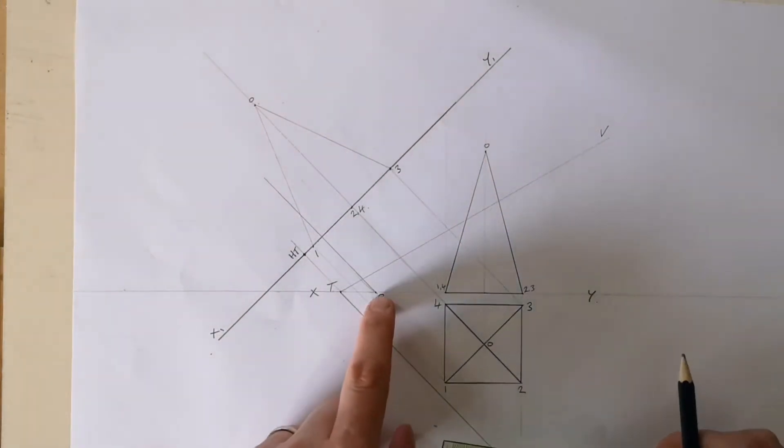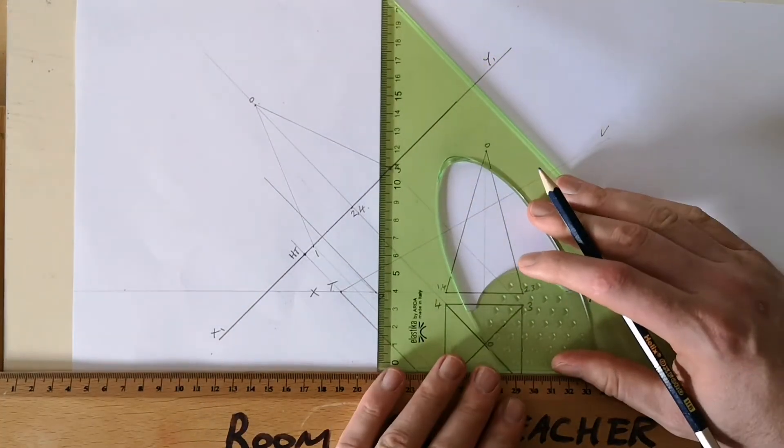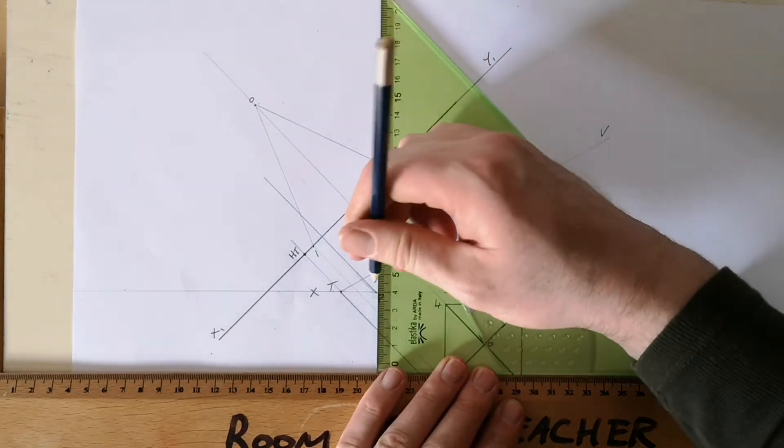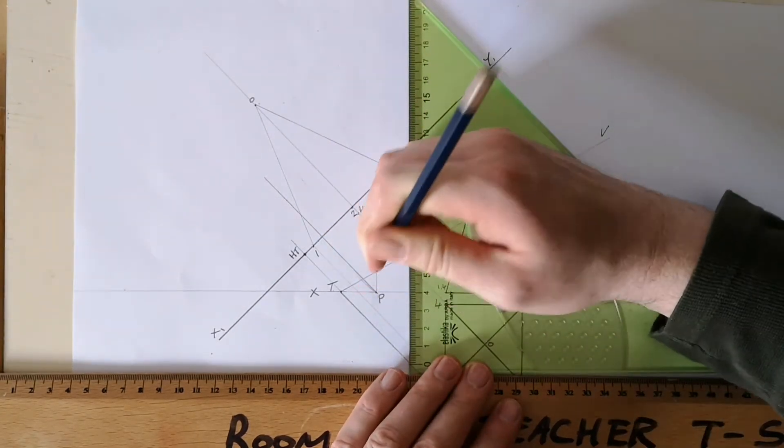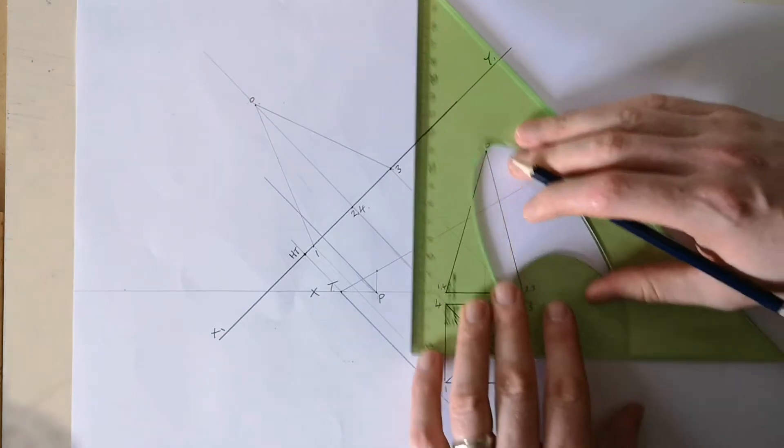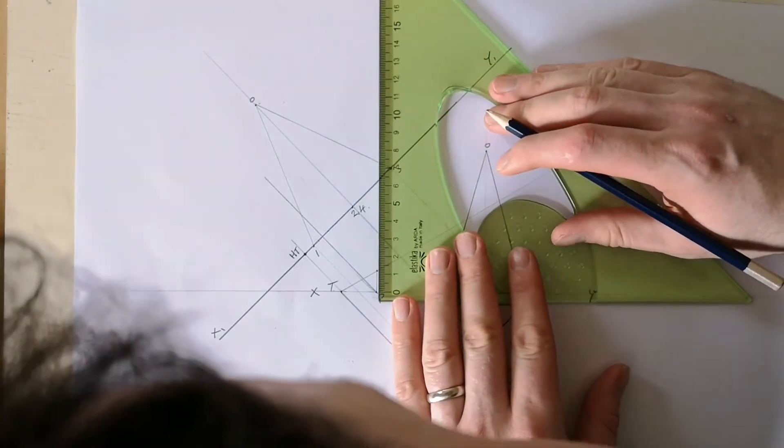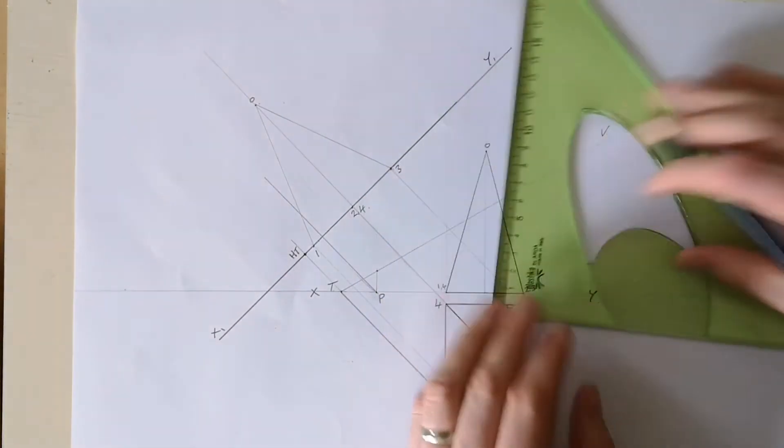From point P now, you take a vertical line. It hits the plane there. I'm going to measure that distance, that distance for me is 12 millimeters.